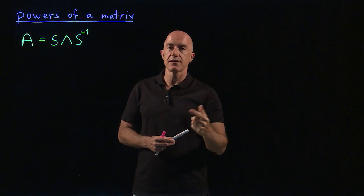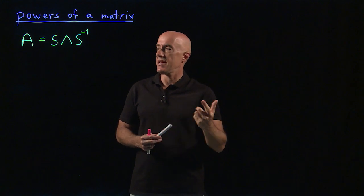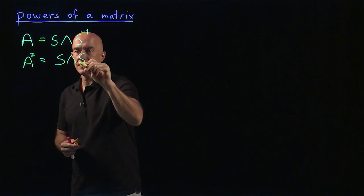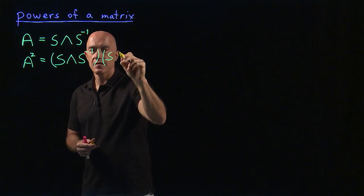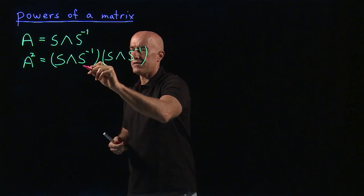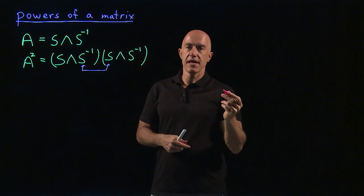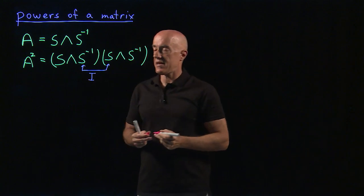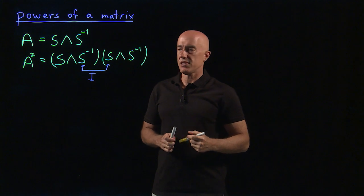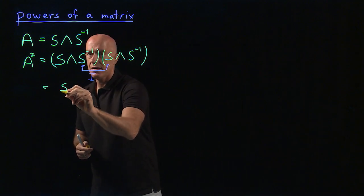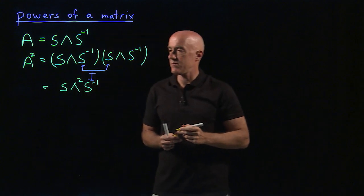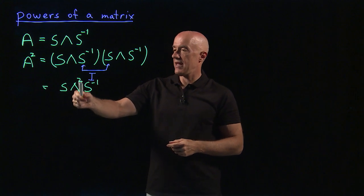What happens if we raise A to some power? A squared becomes S lambda S inverse, times S lambda S inverse. In the middle we have S inverse times S, which by definition of the inverse matrix is the identity matrix. So S inverse S becomes I, and I times lambda is just lambda. This becomes S lambda squared S inverse — we have two lambdas, so lambda squared. A squared equals S lambda squared S inverse.